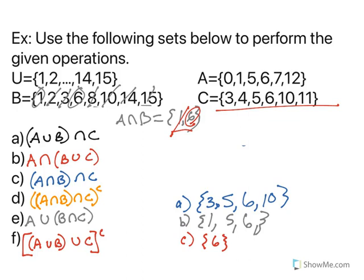All right, now d is going to piggyback onto c because you'll notice that it's (a and b and c) complement. So it's everything in the universal set from part c that is not in part c. Now we know we're going from 1 to 15. So for answer d, it's going to be 1, 2, 3, 4, 5...